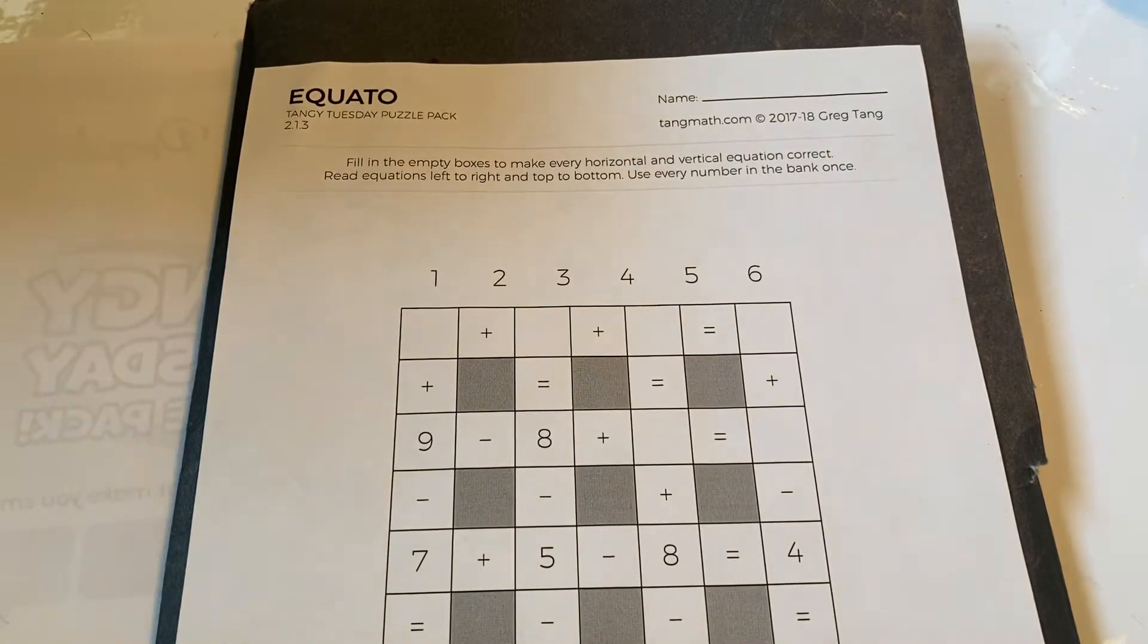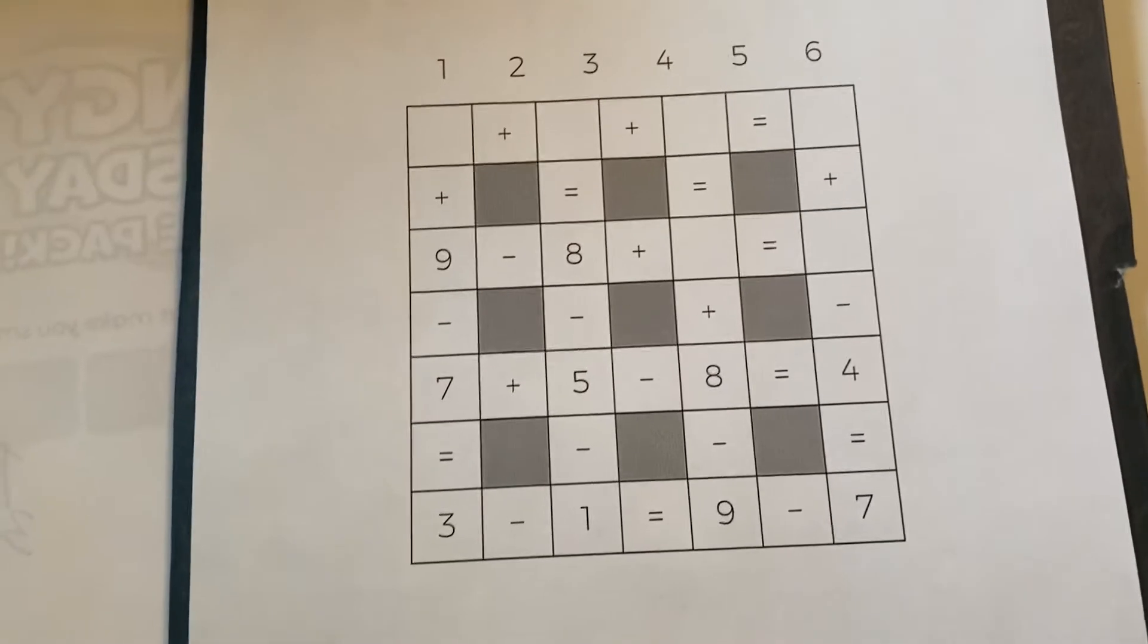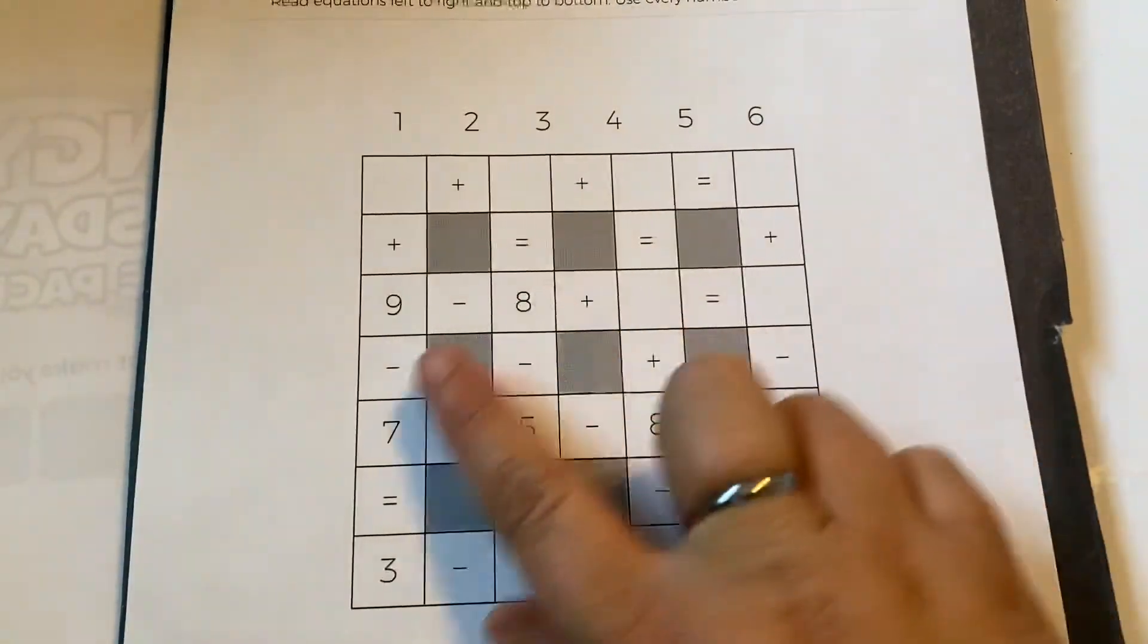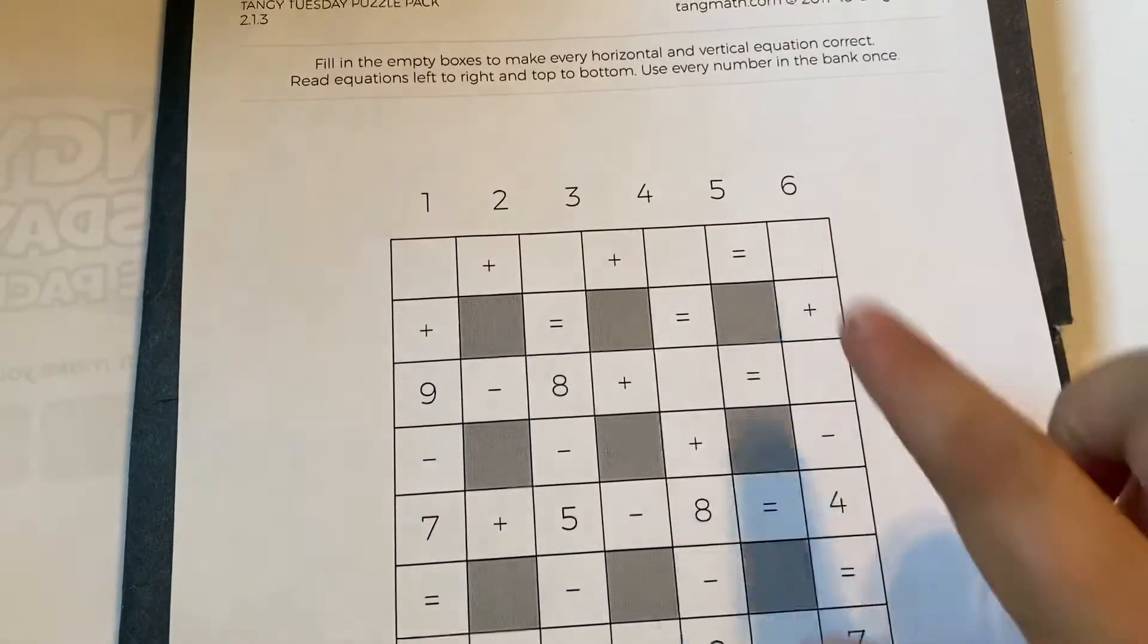Hi class! For today you're going to do a coito for Tiny Tuesday. So again you're filling in the empty boxes with the numbers one through six.